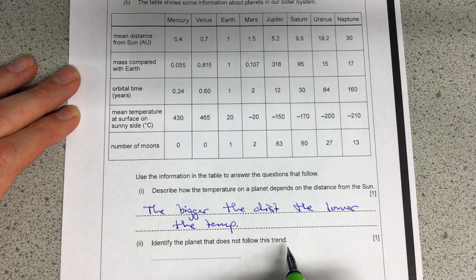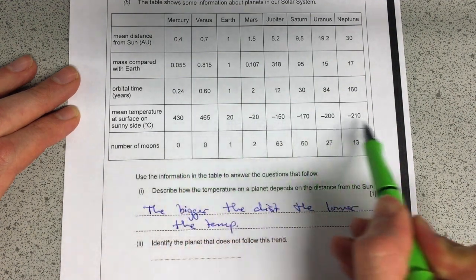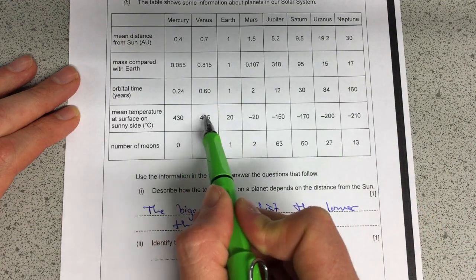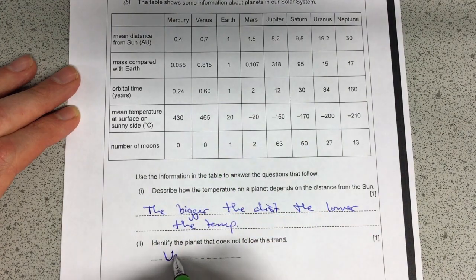Then it says identify the planet that doesn't follow this pattern. So if we have a look we're expecting it to go down as we go across this way. But Venus just goes up and then it goes down and that pattern happens. So Venus is the exception here.